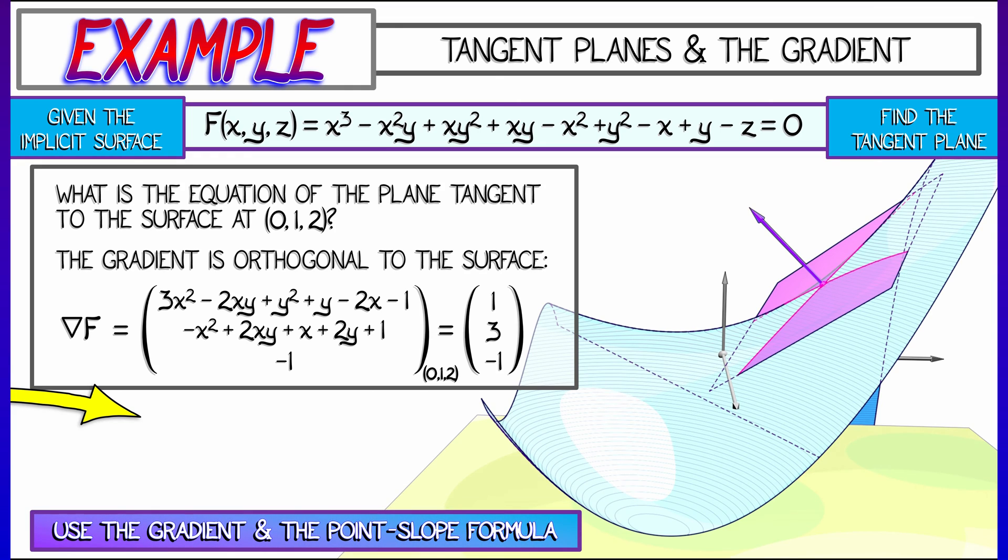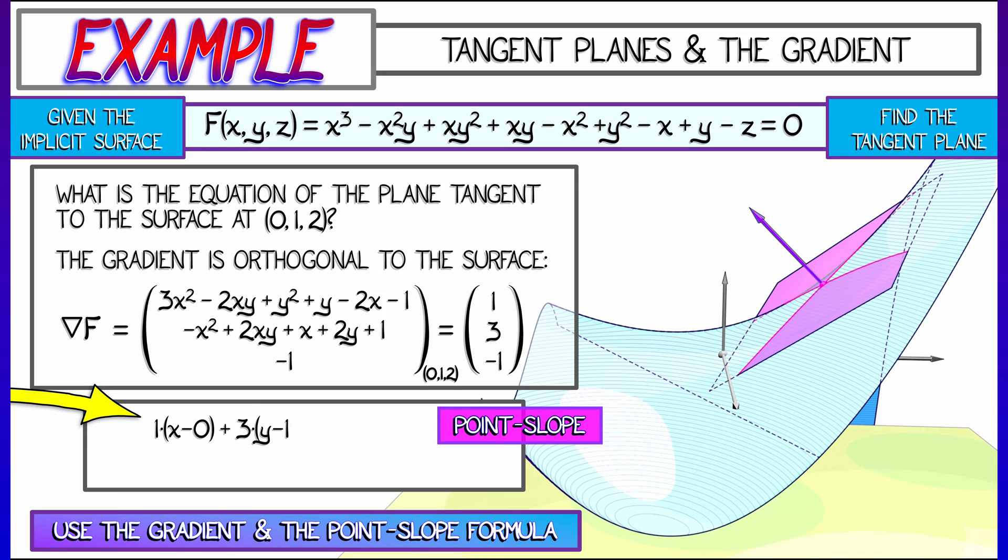And therefore, by the point-slope formula, if we take the dot product of that gradient with x minus the base point, set that equal to zero, we get the equation. That is, after a little bit of algebraic simplification, moving the constants over to the right hand side, x plus 3y minus z equals one. That is your answer, and that's a great way to compute a tangent plane to a level set at the point.